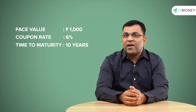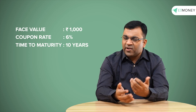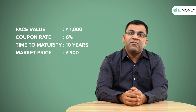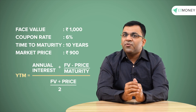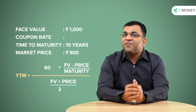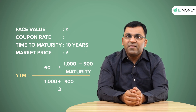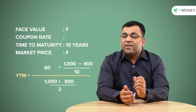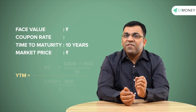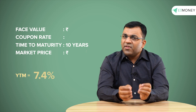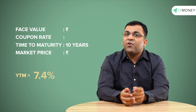Let's understand this with an example. We have a bond whose face value is 1,000 rupees and offers an annual coupon rate of 6%. The bond has 10 more years to mature and is currently available at a discount — priced at 900 rupees. Applying the YTM formula: annual interest is 60 rupees, face value is 1,000 rupees, current price is 900 rupees, and 10 years remain to maturity. This gives us a YTM of 7.4%.